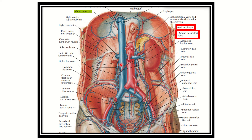Going upward, we can see the testicular vein or ovarian vein — these are also tributaries of the inferior vena cava. We can also see the lumbar veins, which drain into the inferior vena cava. This larger vein is the renal vein, which also drains into the inferior vena cava. And above, these three veins are the hepatic veins, which also drain into the inferior vena cava.